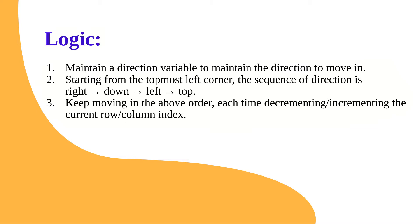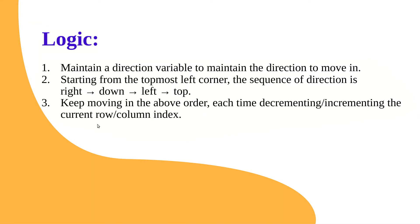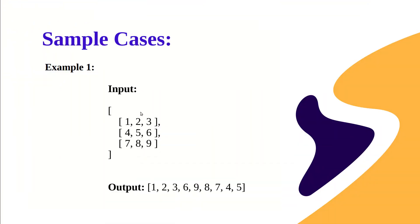Let's discuss the logic. We need to maintain a direction variable to track which direction to move in — sometimes right, sometimes down, sometimes left, and sometimes up. Starting from the top-left corner, the sequence of directions should be right, down, left, up, then right, down, left, up, and so on until we've traversed the entire matrix in spiral order.